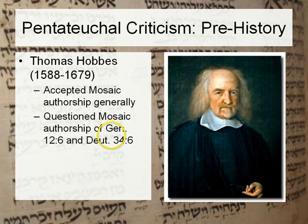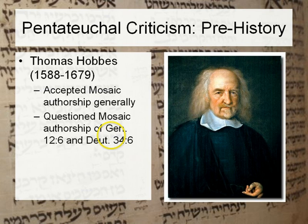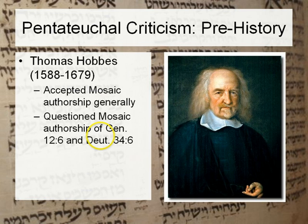The assumption that because we can't find any evidence of the Canaanites they must not have existed is full of holes. Deuteronomy 34:6 records: 'The Lord buried Moses in a valley in the land of Moab, but no man knows his sepulcher until this day.' Hobbes asked why Moses would write that. We're not bothered if Joshua wrote that closing section, but Hobbes raised it as a question.